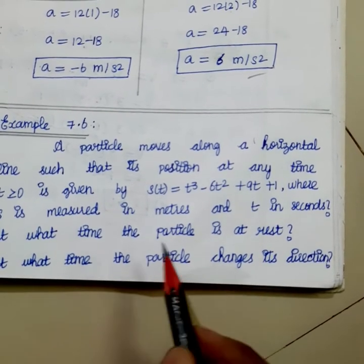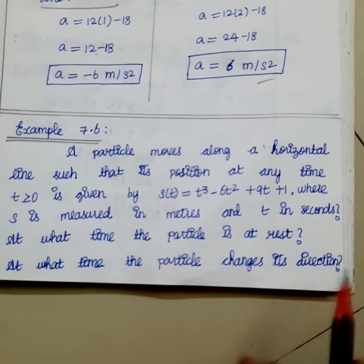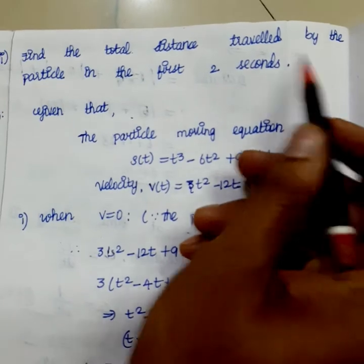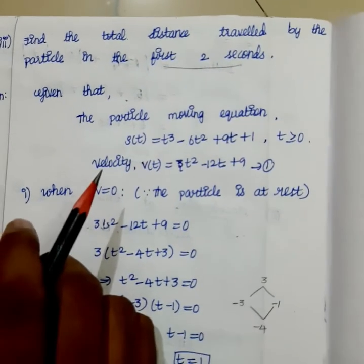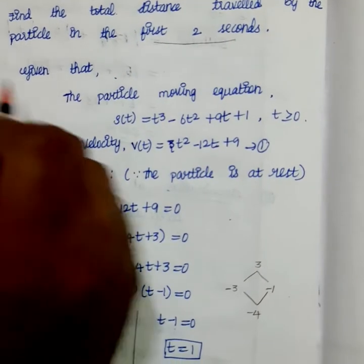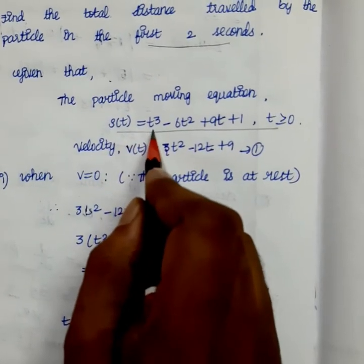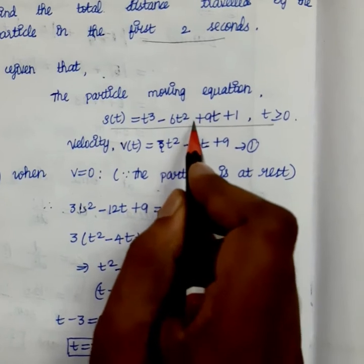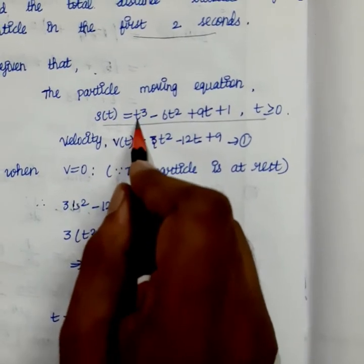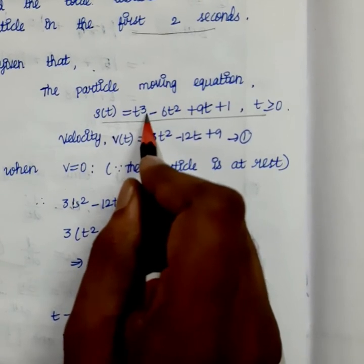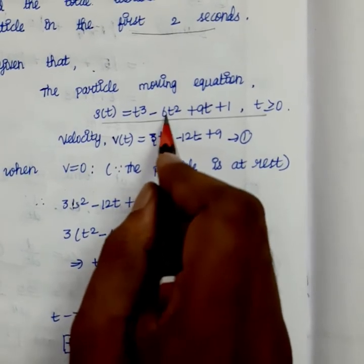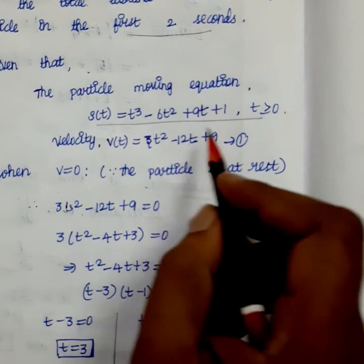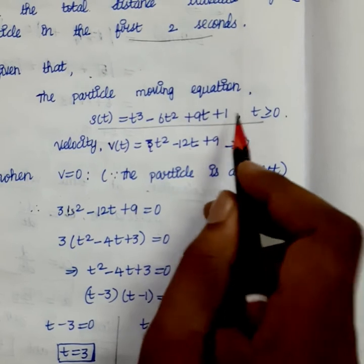At what time is the particle at rest? The particle moves along the equation s(t) = t³ - 6t² + 9t + 1. Now let's find the velocity — the rate of change of displacement with respect to time. Differentiating using the power rule (x^n → n·x^(n-1)): v(t) = 3t² - 12t + 9. The constant term differentiates to 0.